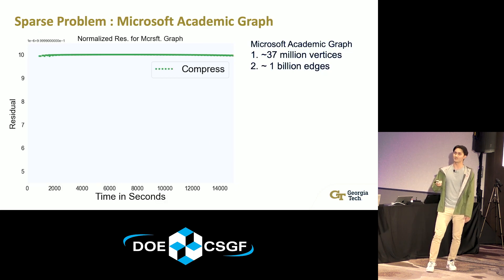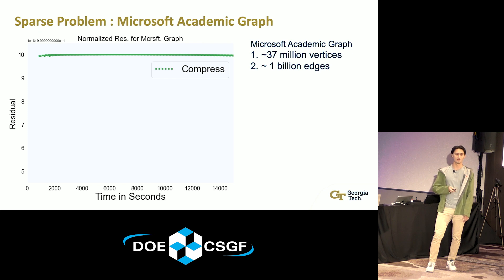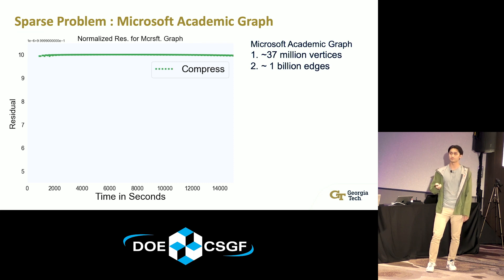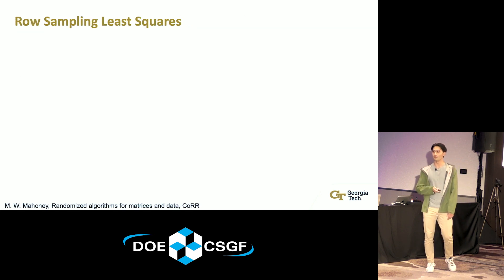Running that same method on the Microsoft Academic Graph — which is 37 million vertices with about a billion non-zeros, so really, really sparse — this random compression method fails to converge.